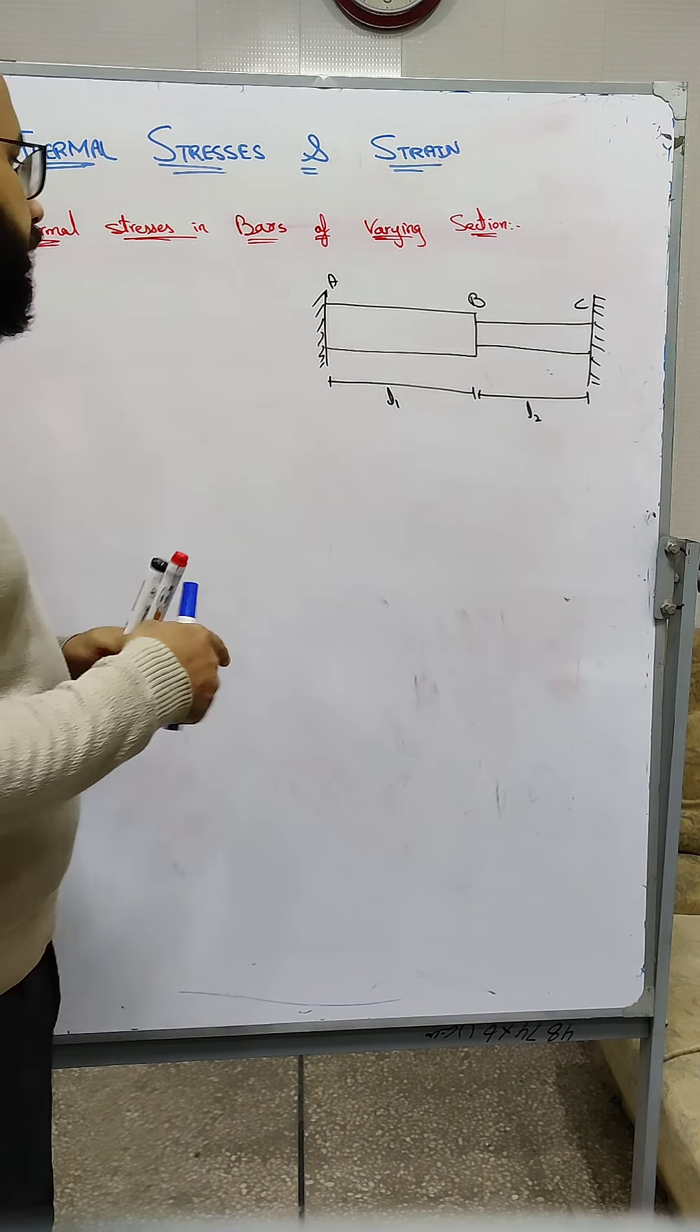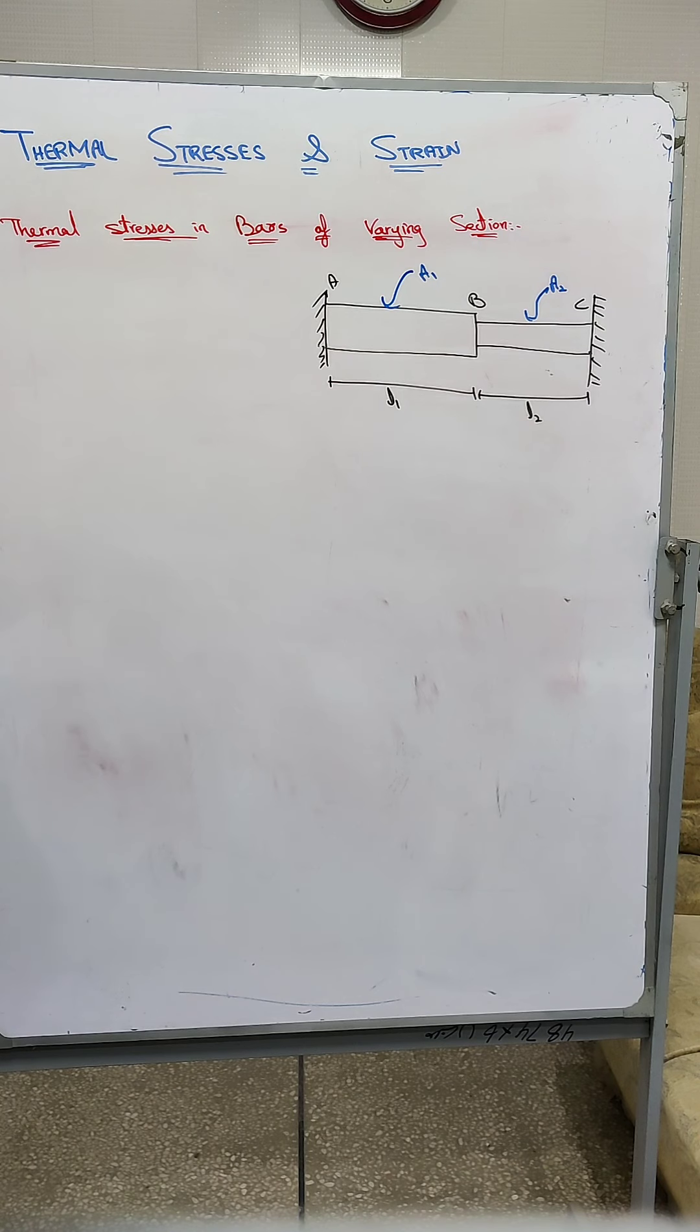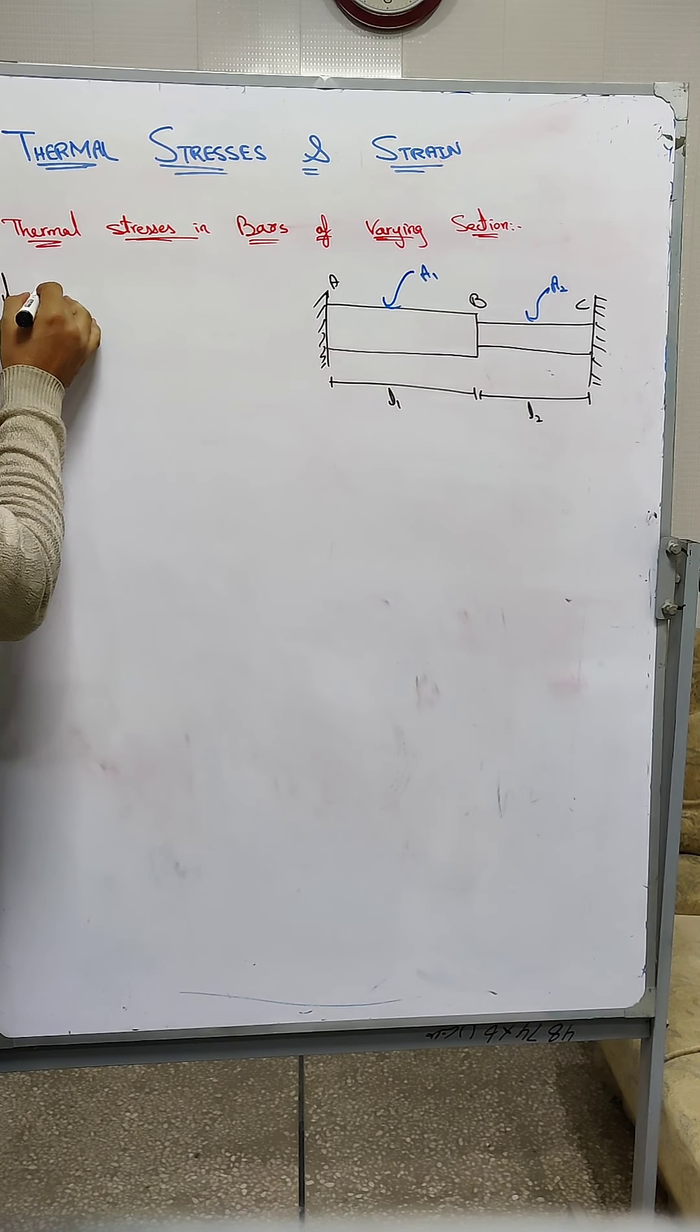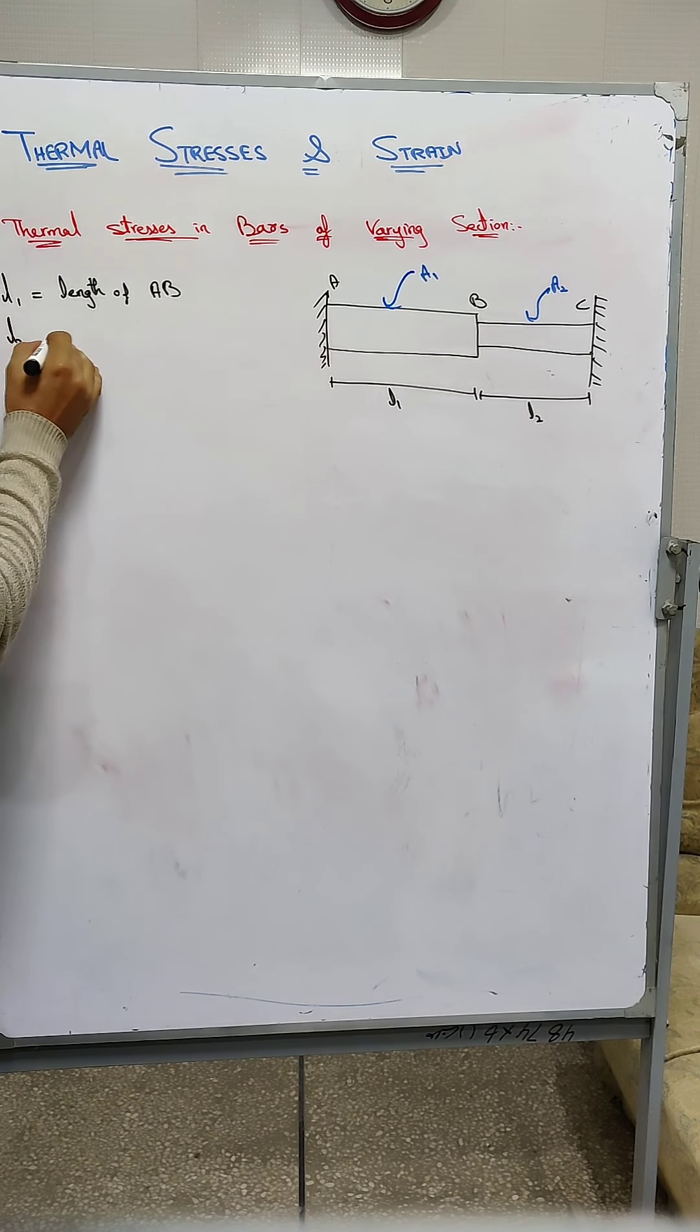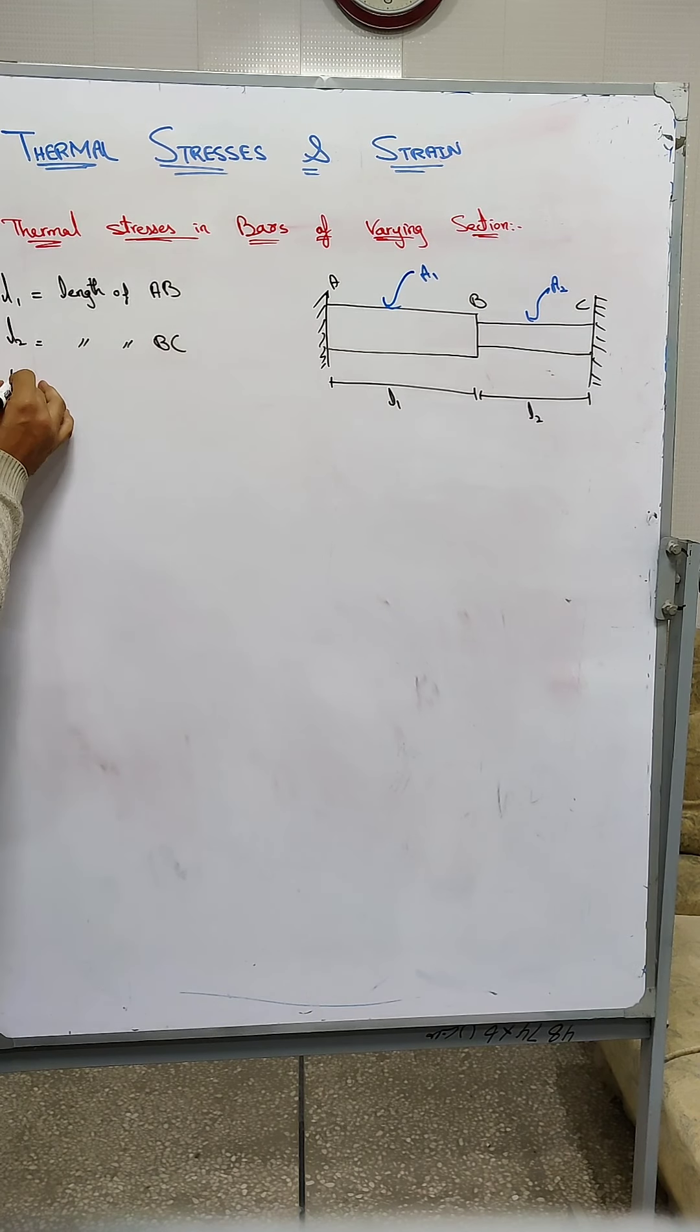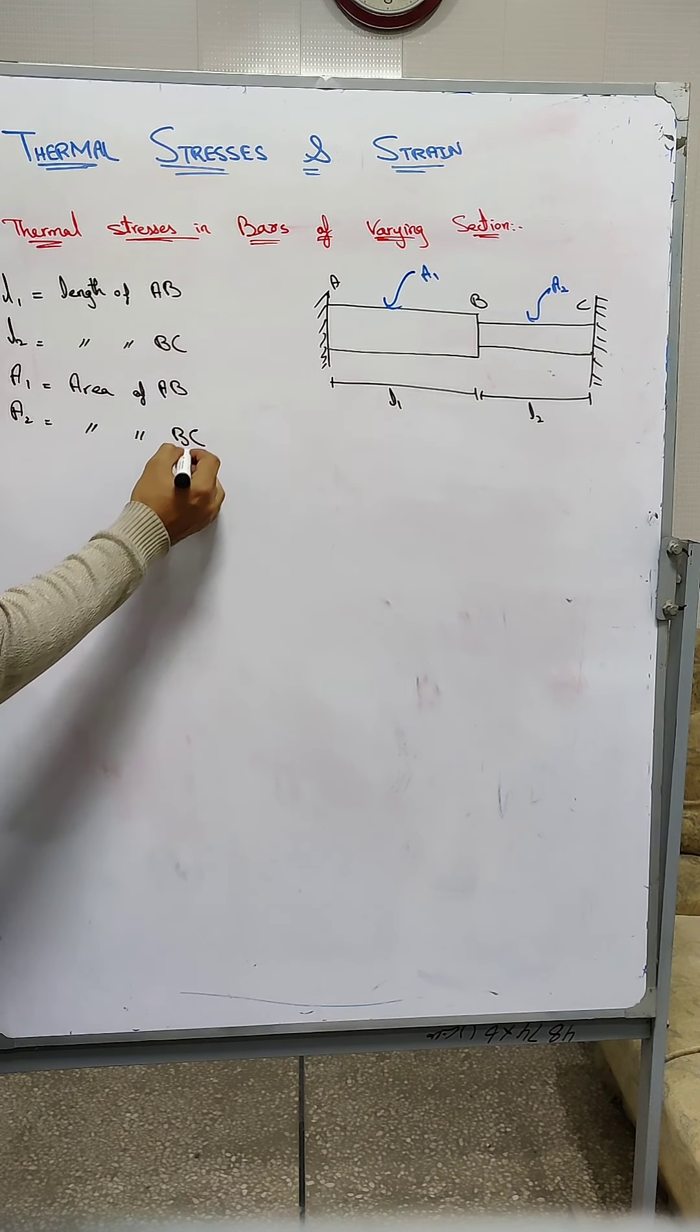The cross-sectional area is not uniform. We have L1 as the length of A1, L2 as the length of BC. A1 is the area of AB, A2 is the area of BC.